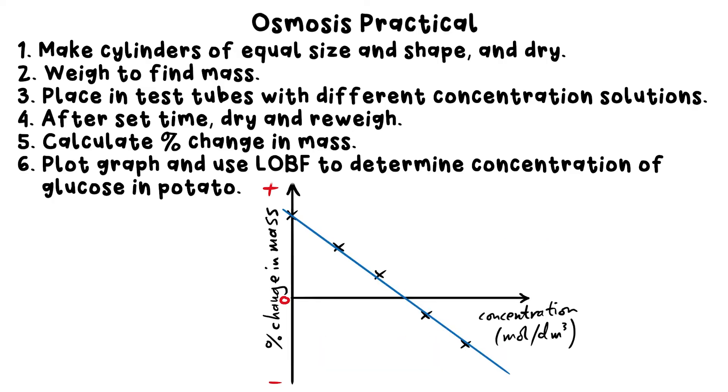If we draw a straight line of best fit through, it crosses the x-axis. This tells us what the concentration of solution would have had to have been such that the mass didn't change at all. And that can only happen if the glucose concentration inside the potato cells was the same as outside. So that's what we can find out from this experiment: the concentration of glucose inside the cells of a potato.